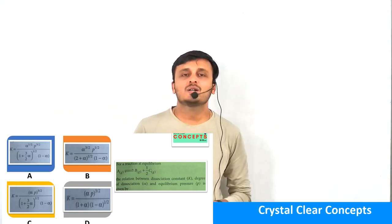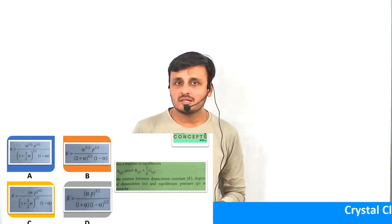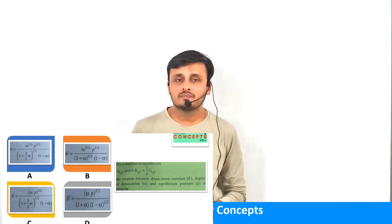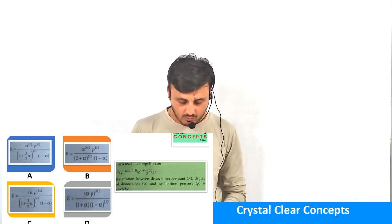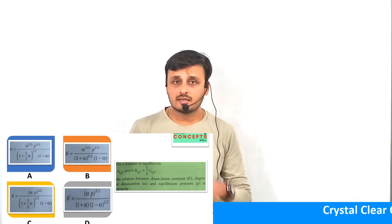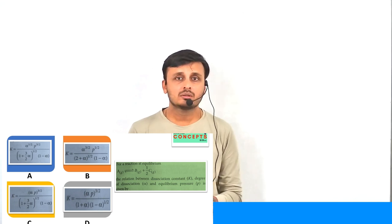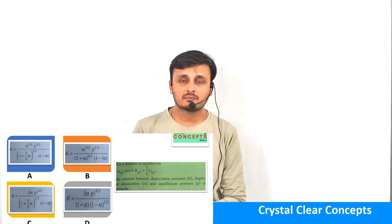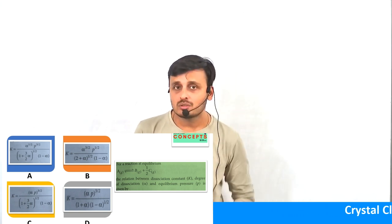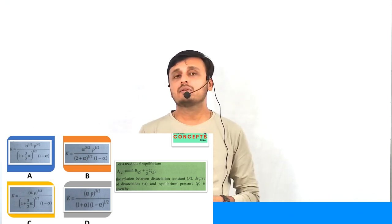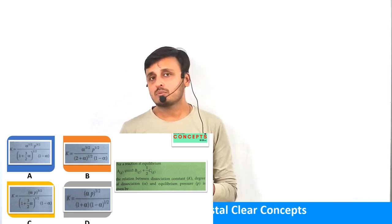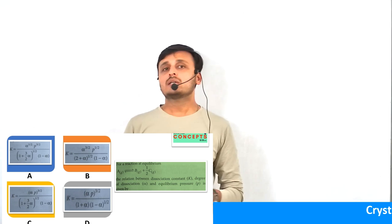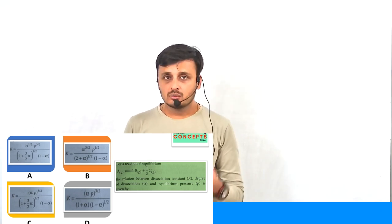Hello dear students. This is a question from JEE Main which was asked in the last year examination. Let us understand the concept. Equilibrium is a concept derived from understanding and logic, relevant to pressures. There are two concepts: KC and KP. The question which was asked was about KP. So let us understand the question.